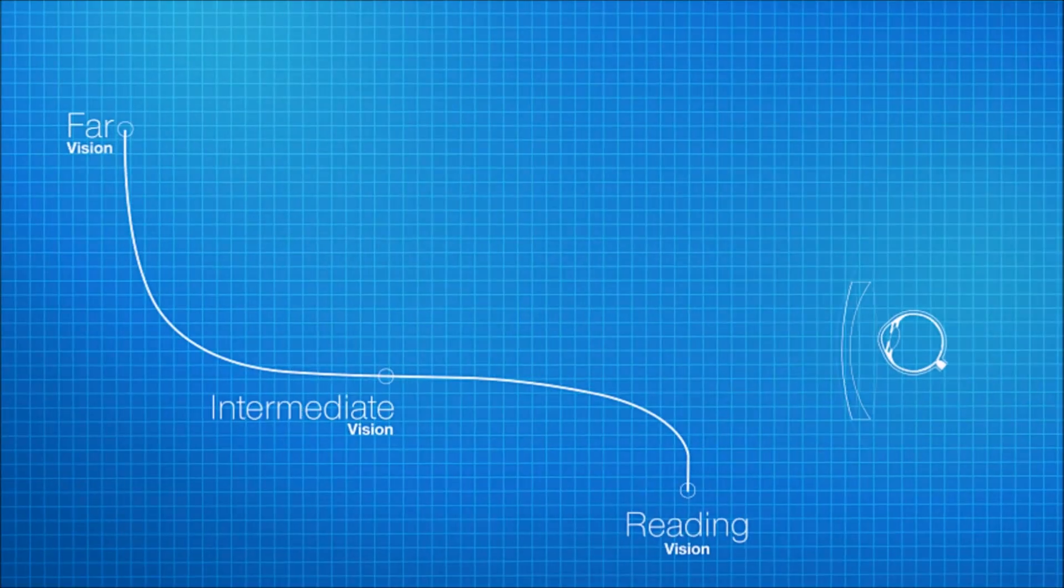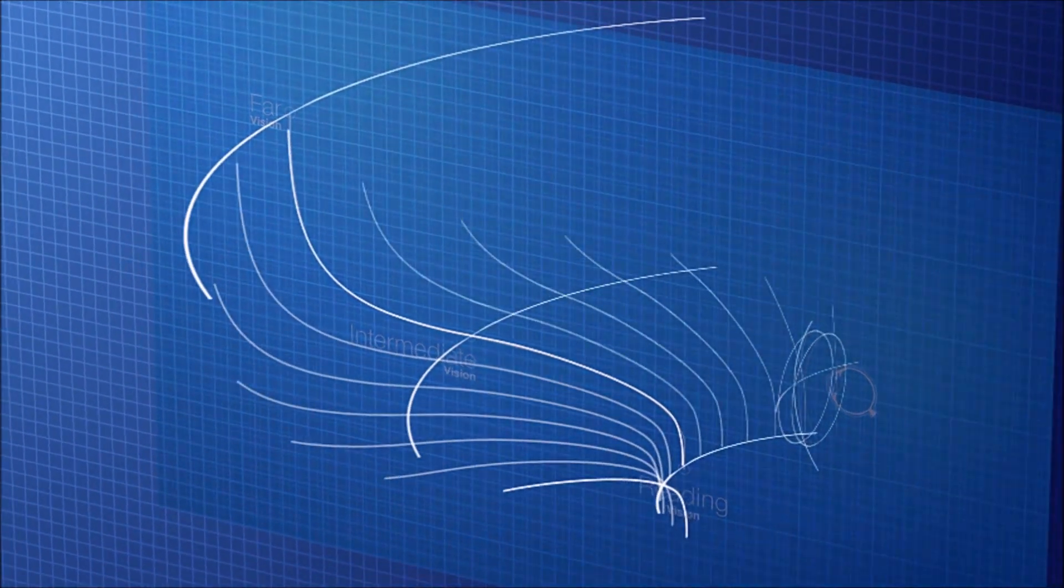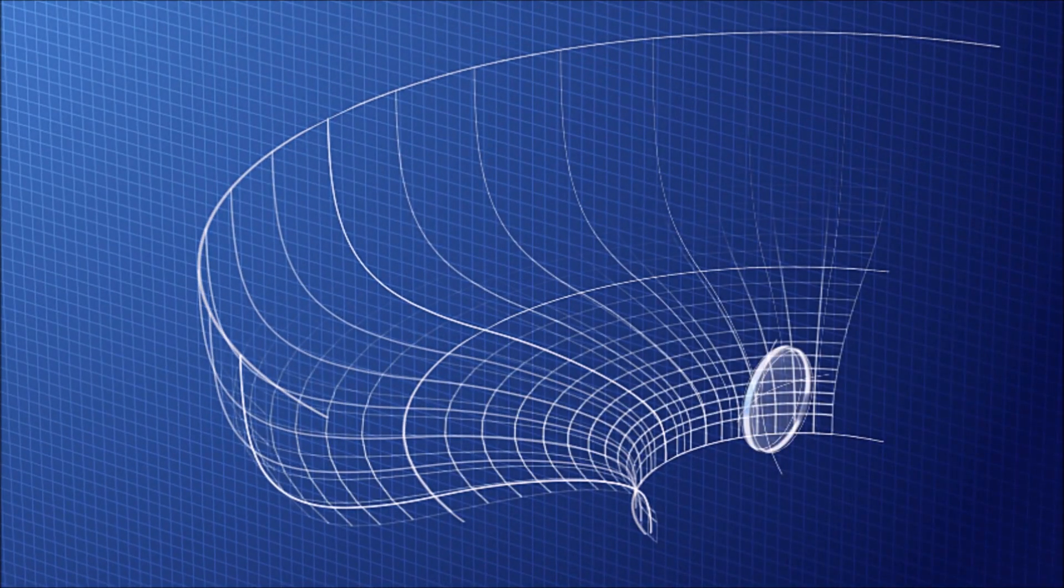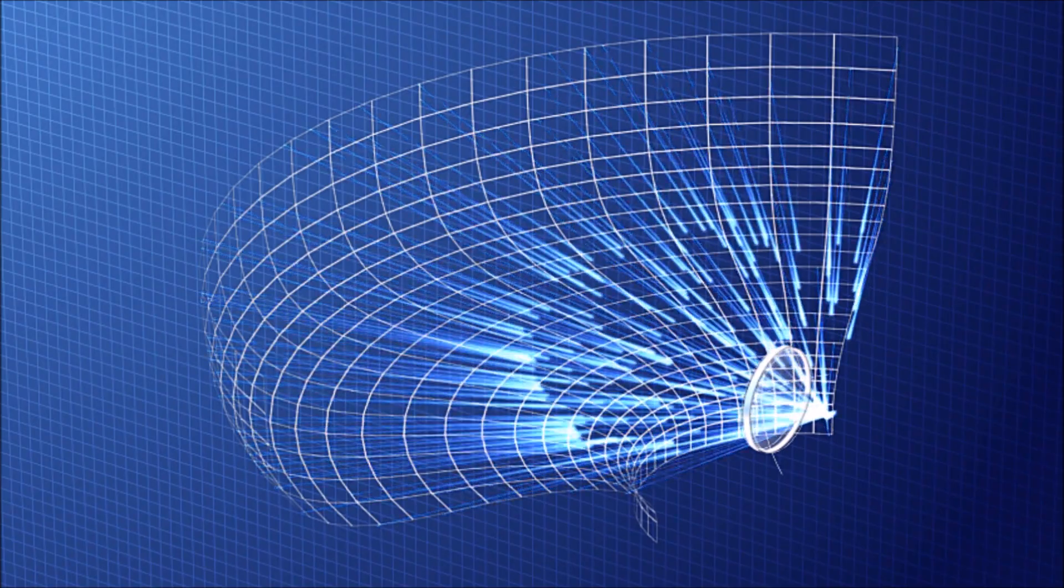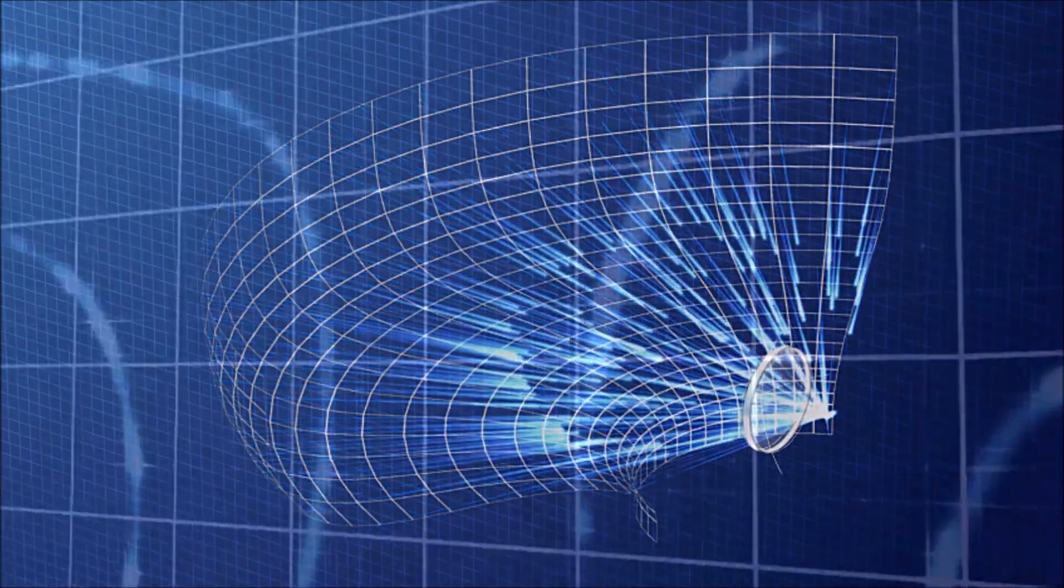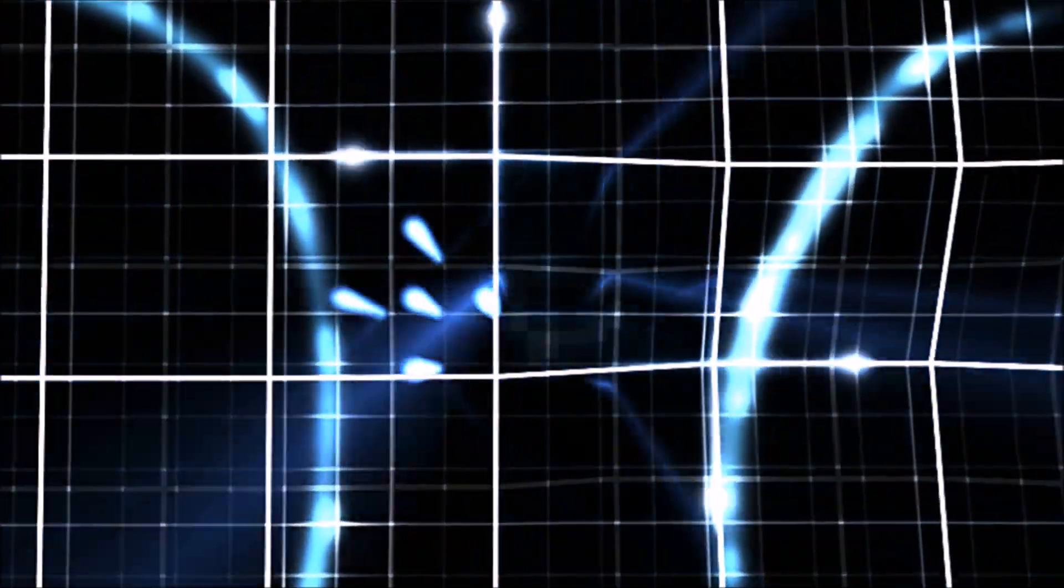The ray tracing method is extended to include the space object. This mathematical model simulates thousands of rays coming from different zones through the front and back surface of the lens, which is optimized during the beam refraction.